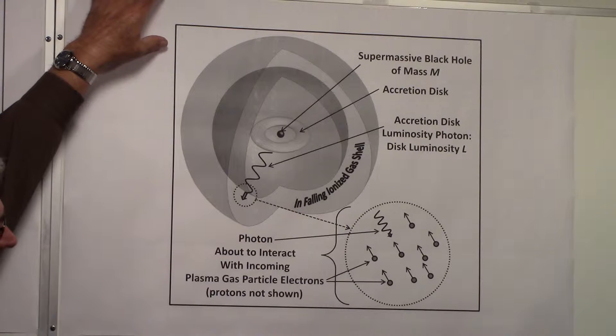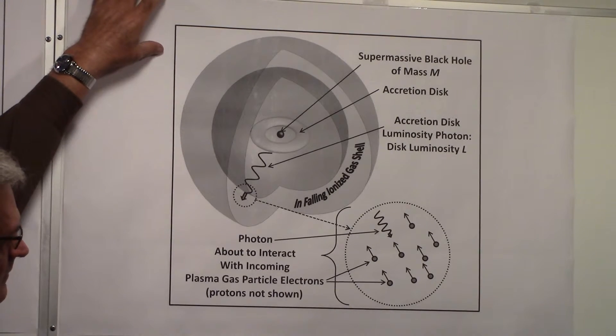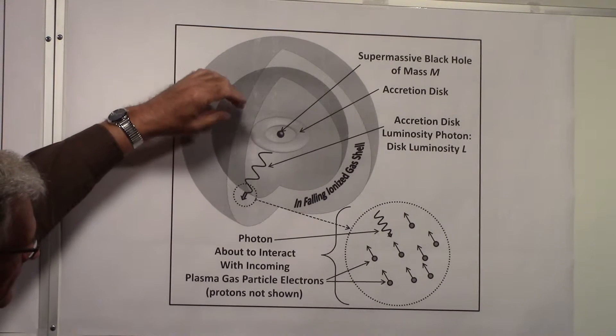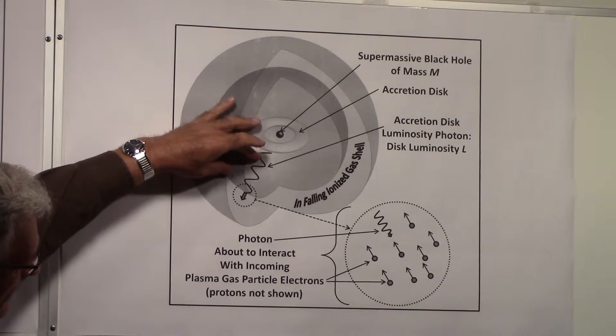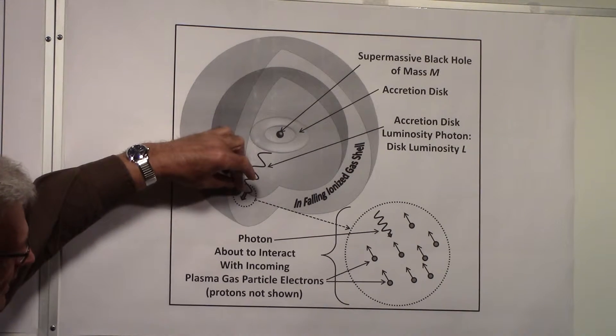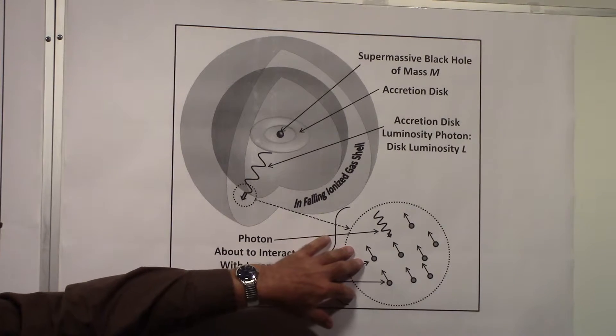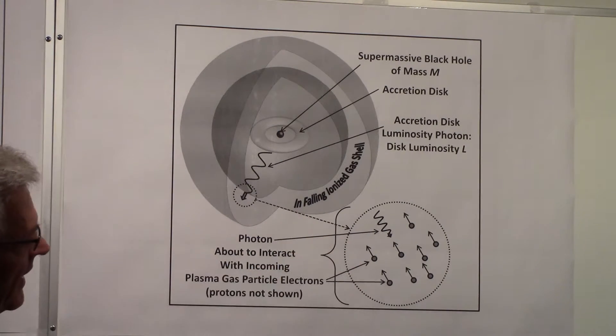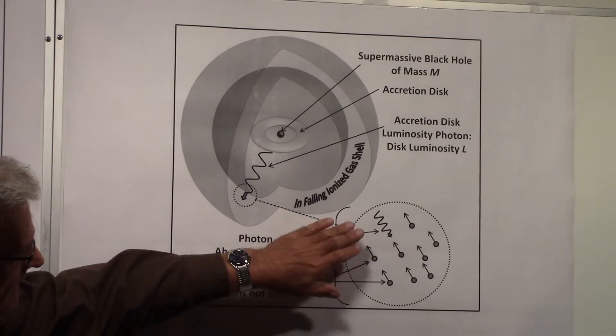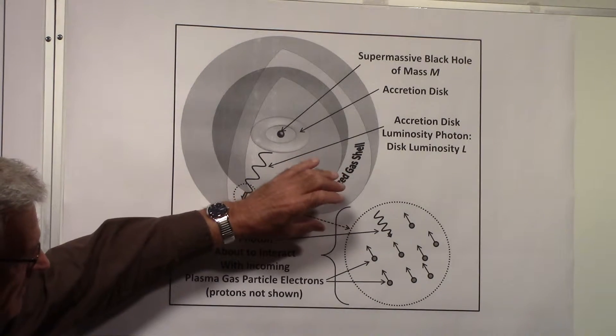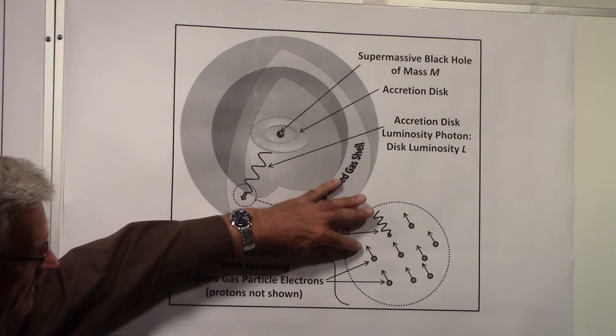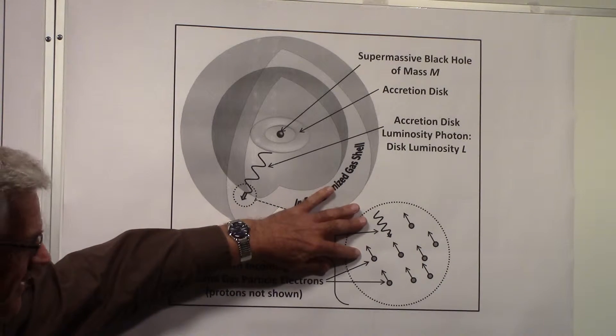In order to explain this, we took a look at a photon leaving the accretion disc and interacting with the incoming gas particles, and we explained that the photon has a much greater chance of interacting with the electrons than with the protons.